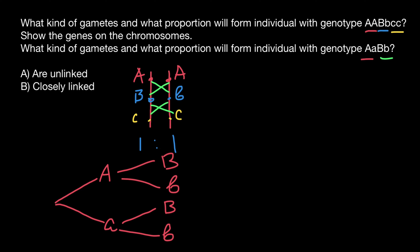The ratio is going to be one quarter, one quarter, one quarter, and one quarter — or 25% each. So the probability of having these genotypes in the progeny is going to be the same. However, our picture would be different if we knew that these genes are unlinked or closely linked.